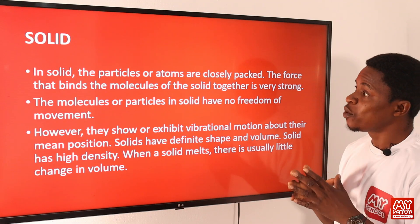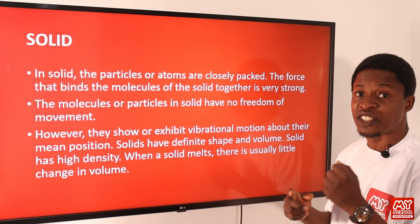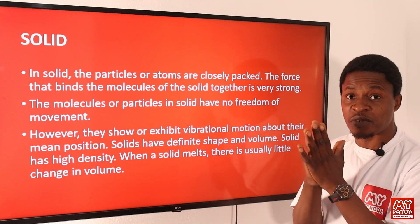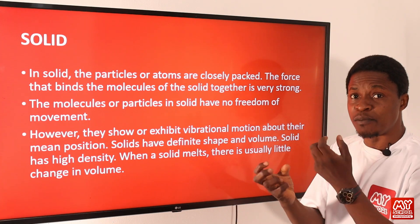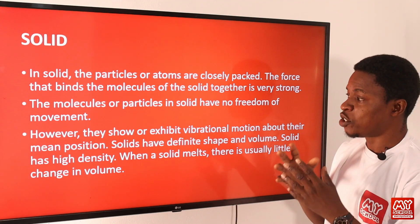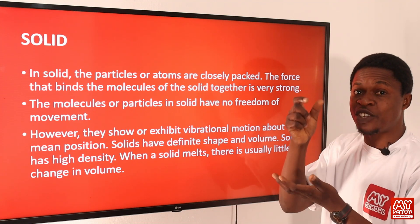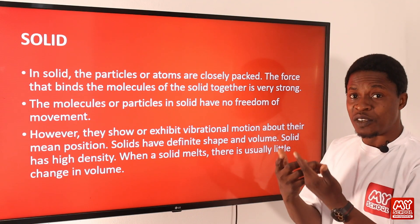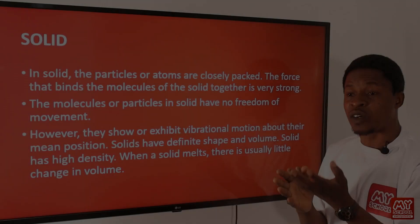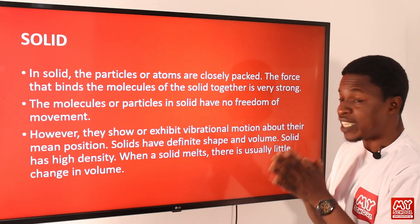Solids. In solids, the particles or atoms are closely packed together. The force that binds the molecules of the solid together is very strong, so the molecules or particles in solids have no freedom of movement at all. They exhibit vibrational motion about their mean position. They have definite shape — when you see a cube you can tell it's a cube, when you see a cuboid you can tell it's a cuboid. They also have definite volume, which can be expressed in cm cubed or metre cubed.